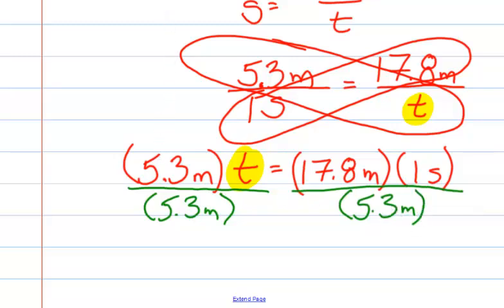Now, we know that if we have something on the bottom and on the top that we can cross them out. They cancel out. So 5.3 and 5.3 cancel out. Meters and meters cancel out. Over here, we have meters and meters, so they cancel out.